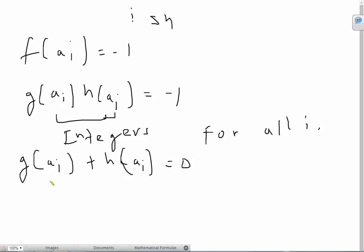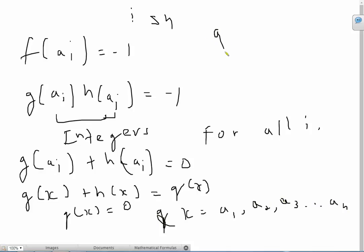So we can write g(ai) plus h(ai) equals 0 for all i. Now let's define a new polynomial. Let's say g(x) plus h(x) equals q(x). And the equation q(x) equals 0 is only going to be true when we put x as a1, a2, a3, all the way to an. So we have that the equation q(x) equals 0 has n distinct roots.